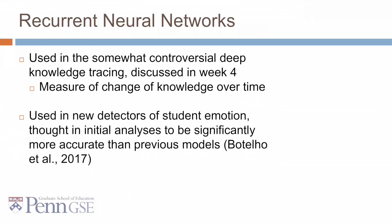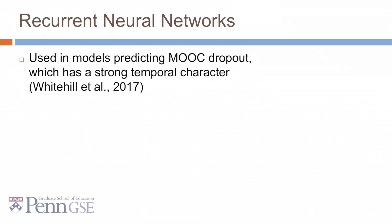And they've been used in new detectors of student emotion, thought in initial analyses to be significantly more accurate than previous models. In these cases, they leverage reliable trends and patterns in emotion over time. They've also been used in models predicting MOOC dropout, which has a strong temporal character, as students have a trajectory from being engaged, to less engaged, to eventually stopping out of a course.